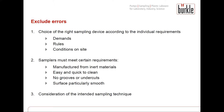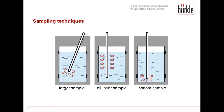You also have to consider the intended sampling technique when choosing an appropriate sampler. In general there are three sampling techniques: the target sample, the all-layer sample, and the bottom sample. A target sample is taken from a specific predetermined point of the material, so you can analyze the material properties at that specific spot. This is especially done when the material is really homogeneous.